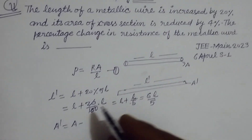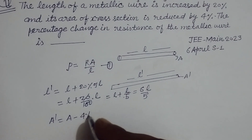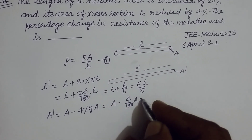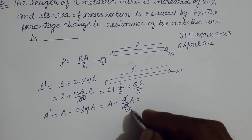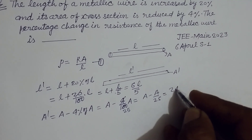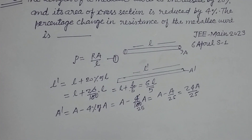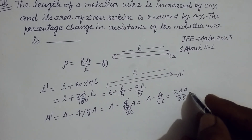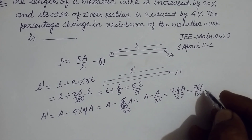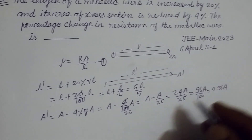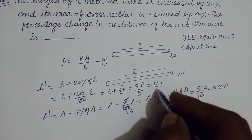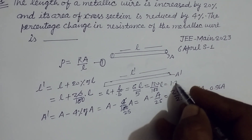And the new area A' is A minus 4% of A. So this is A minus 4 upon 100 into A, which gives A minus A upon 25, equal to 24A upon 25. We can write this as 96A upon 100, or 0.96A. So L' is 1.2L and A' is 0.96A.